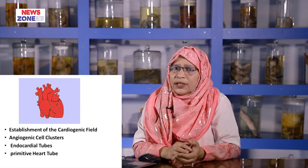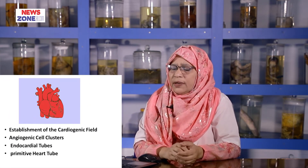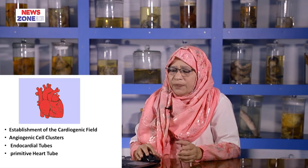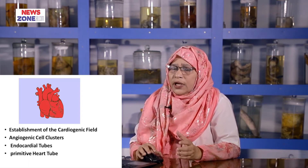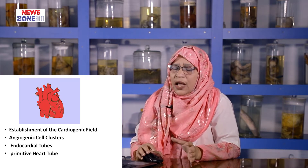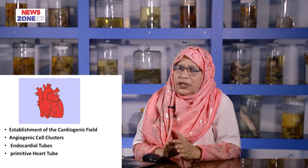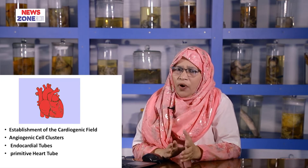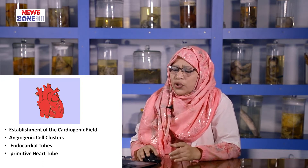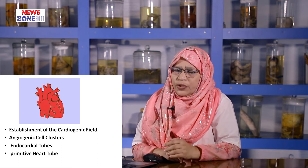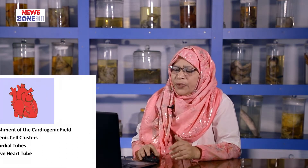Now the primitive heart tube. For its formation, some events should be memorized. First is where the cardiogenic field is established. Second, there are angiogenic cell clusters which gradually coalesce and form a tube — two endocardial tubes are formed. When these two endocardial tubes fuse, they form a single primitive heart tube.